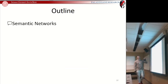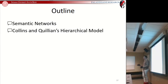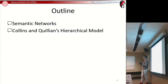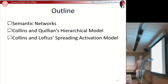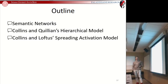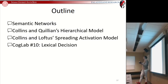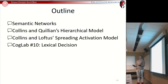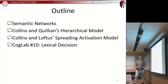What we're going to be doing today is continue on with our look at semantic networks. We introduced Collins and Quillian's hierarchical model last time, so we'll do a brief recap of that and then see if there's any evidence that your mind actually organizes knowledge that way. We're going to look at a modification — Collins and Loftus' spreading activation model — then move into our CogLab on lexical decisions, and look at implications about biases in our society.